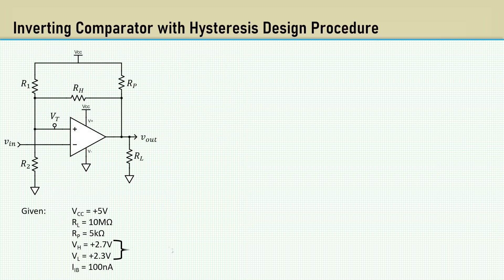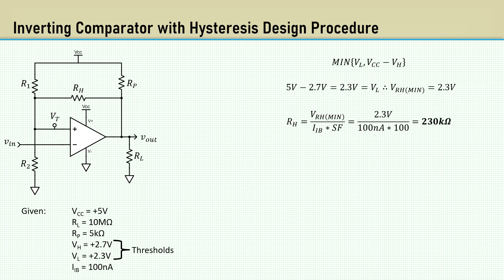Here's the quick and easy design procedure for the inverting comparator with hysteresis. Here are the given parameters which have a high threshold of 2.7 volts and a low threshold of 2.3 volts. First, we determine the state that has the minimum voltage across RH. Since the thresholds are symmetrical, VCC minus VH is equal to VL, so use 2.3 volts. Using the scale factor of 100 times the input bias current, we get RH which is 230K.